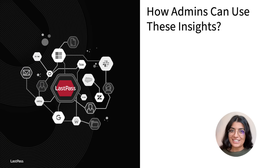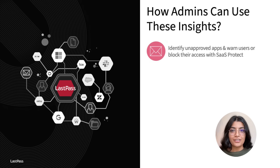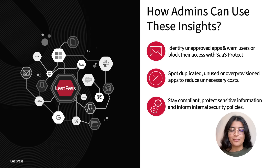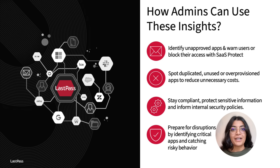So, how can you leverage these insights? First, you can identify any unapproved apps or AI tools your team may be using, and warn users or even block their access with just a few clicks. You can also spot duplicated, unused, or over-provisioned apps to reduce unnecessary cost. The data helps you stay compliant, protect sensitive information, and make informed decisions about your internal security policies. Finally, you can prepare for disruptions by identifying critical apps and catching risky behavior before it causes problems.